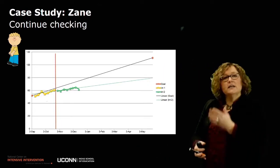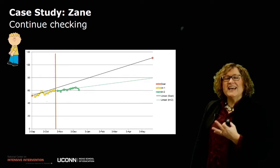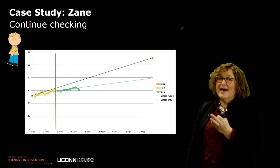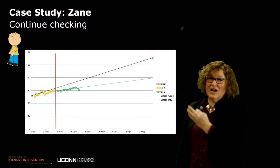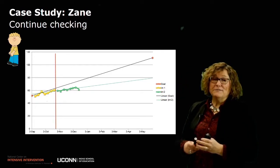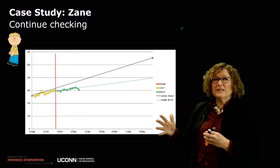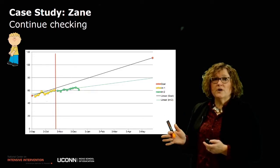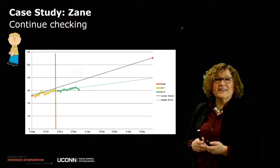As she continues to collect weekly data for this new intervention, if you said that Zane is not on track based on trend compared to goal, you would be right. Unfortunately, this new intervention is still not helping him get on track to meet his goal line. So after eight data points, she considers that she probably needs to make another change.